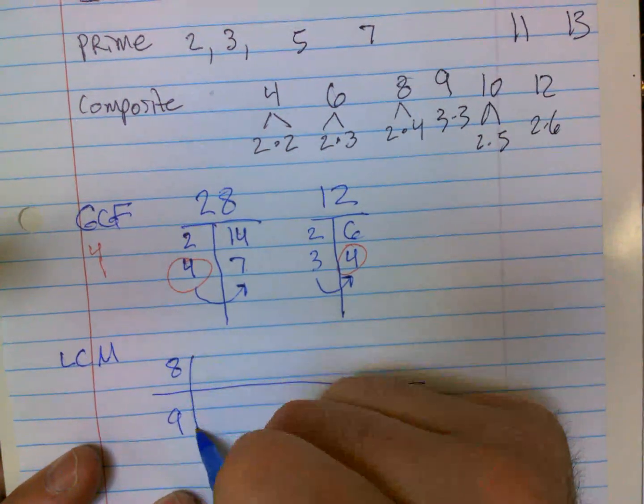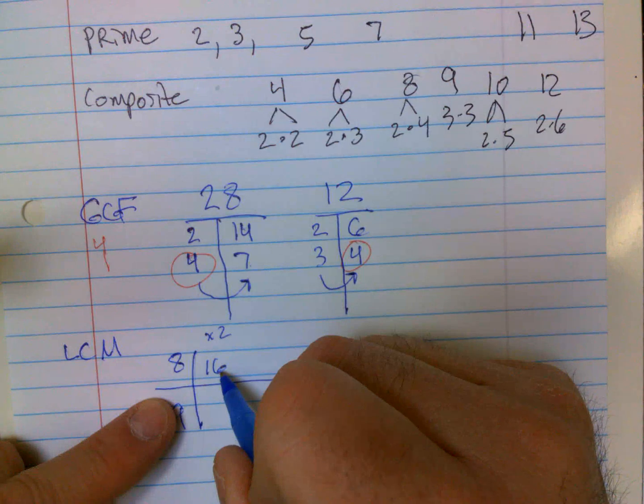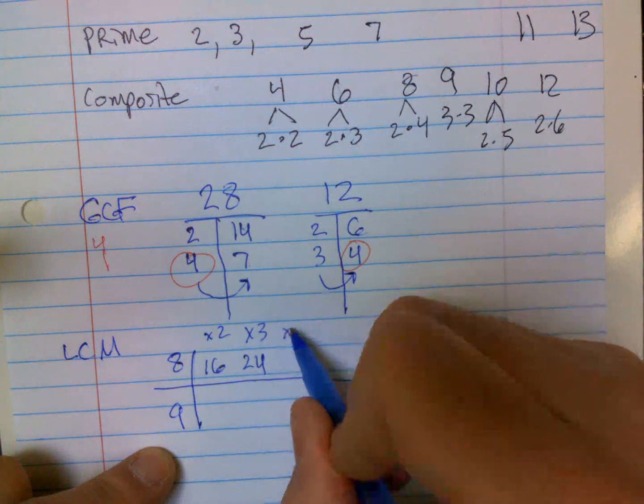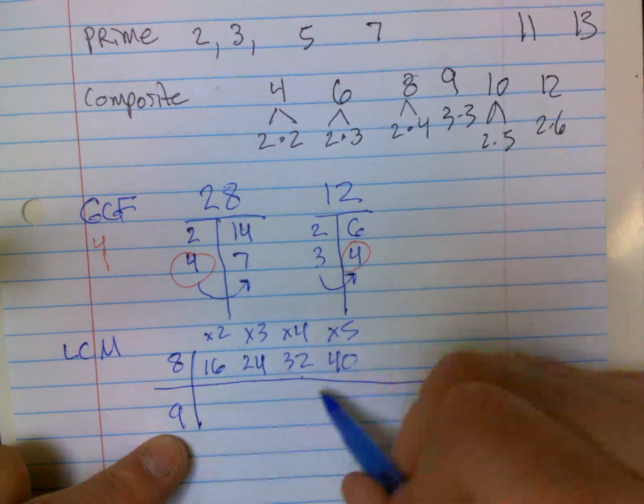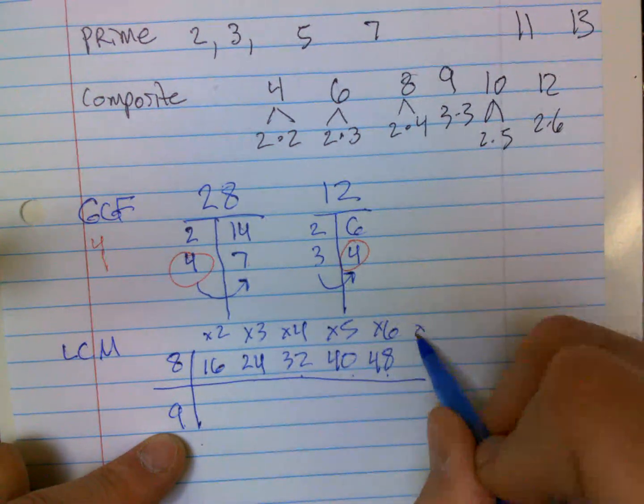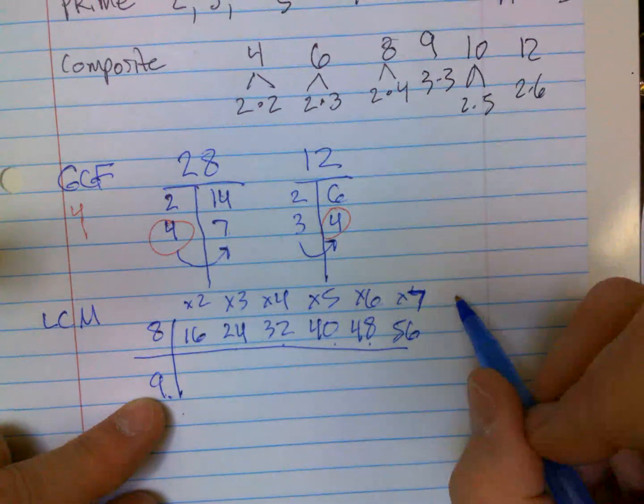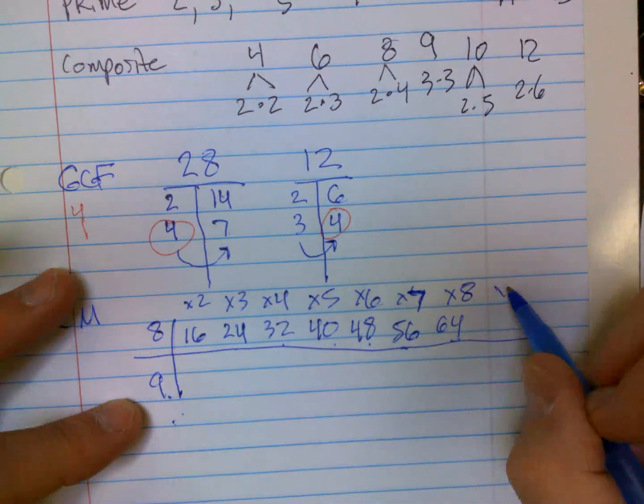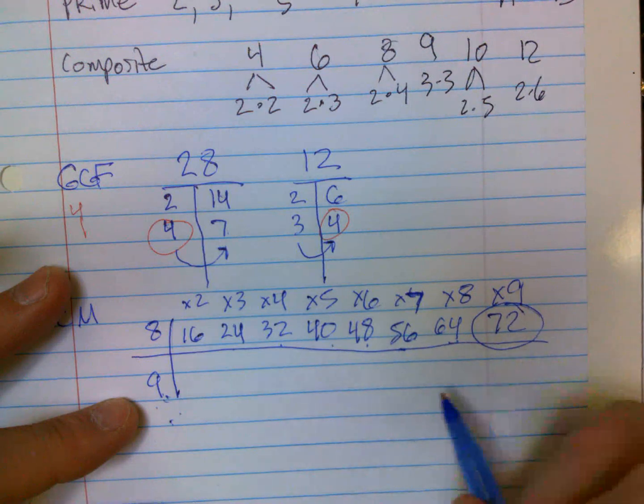You're just making a multiplication table, I'm looking for a number that nine goes into. So let's try: times two is 16, does nine go into 16? No. Eight times three is 24, does nine go into that? No. Times four is 32, does nine go in 32? No. Times five is 40, does nine go into that? No. Times six is 48, does nine go in 48? No. Times seven is 56, does nine go into that? No. Times eight is 64, does nine go into that? No. Well here's the obvious: eight times nine is 72, does nine go into 72? Yes. How many times? Eight.